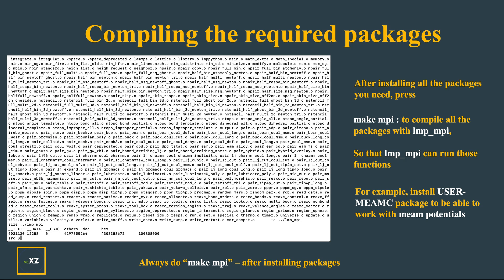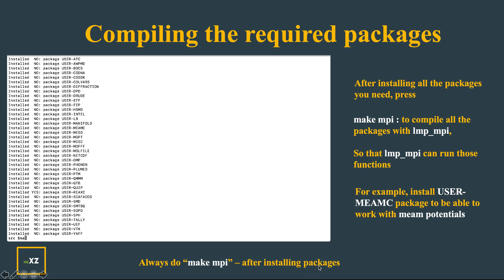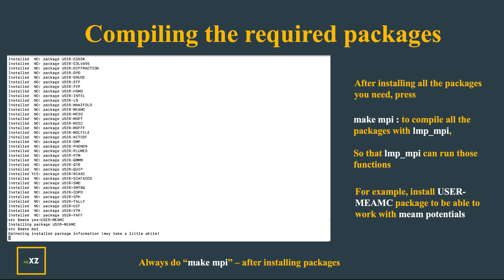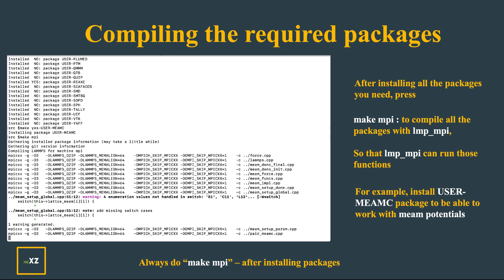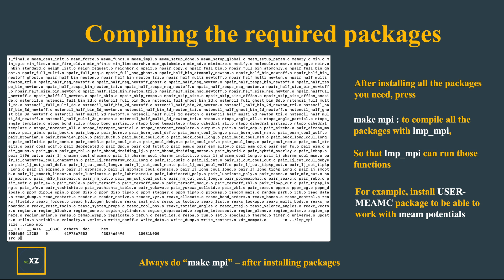When you see certain errors, don't worry about them — they are just warnings. You can see that lmp_mpi has been installed. Now I press make ps again and install the MEAM package using make yes-meamc. After installing the package I press make mpi again. The reason I showed this is because after you install any package, it doesn't mean the package works — you need to press make mpi for it to actually work.